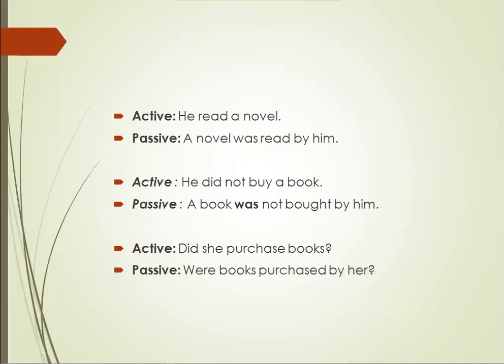In negative: 'He did not buy a book,' so the passive is 'A book was not bought by him.' Interrogative: 'Did she purchase books?' — 'did' is the helping verb, 'she' is the subject, 'purchased' is the verb, 'books' is the object. As the object 'books' is plural, we use 'were': 'Were books purchased by her?'